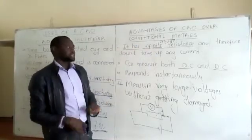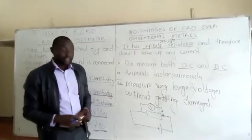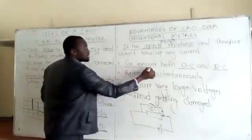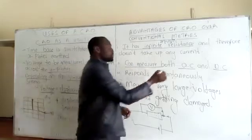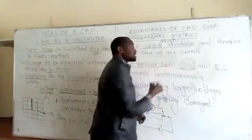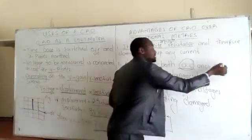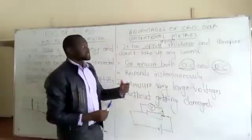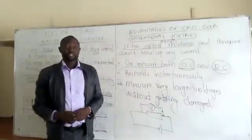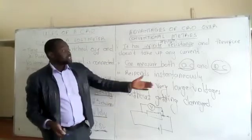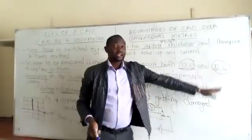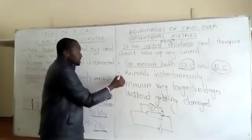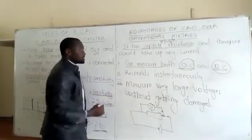The other advantage is that the CRO can measure both alternating current and direct current. Most conventional voltmeters will only measure the direct current. The third advantage is that the CRO responds instantaneously.